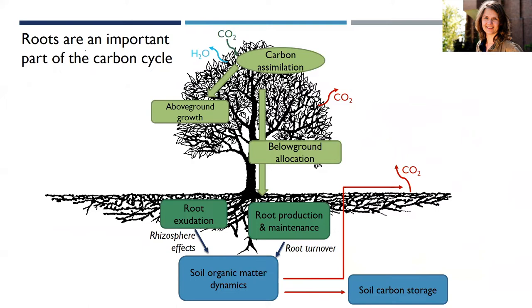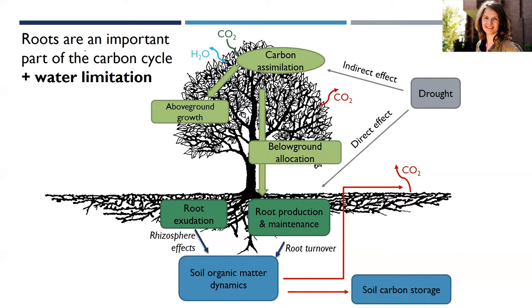At the ecosystem scale, fine root growth dynamics are a very important part of the carbon cycle. In fact, around 50% of all organic carbon found on land is stored in forests, and a big part of that pool is found below ground. In the context of climate change, one of the big questions is what will happen to this huge pool of carbon, and part of the reason we can't answer that yet is our very limited understanding of root-soil interactions.